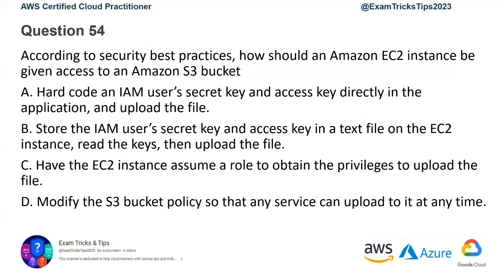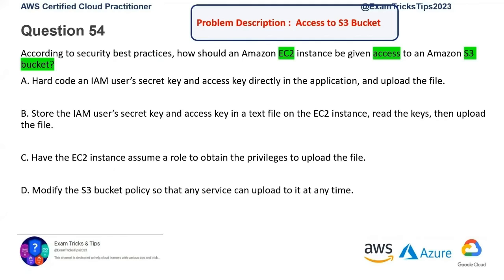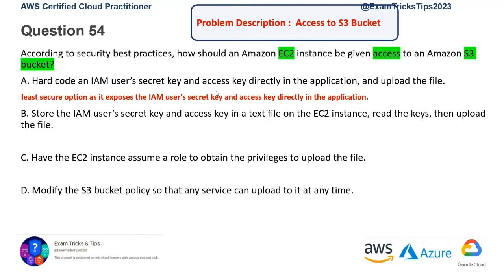Question number 54. According to security best practices, how should an Amazon EC2 instance be given access to an Amazon S3 bucket? We need an EC2 instance to access an S3 bucket. The first option says to hard code an IAM user secret key — the moment you see 'hard code,' it's never the right answer, anywhere. It's the least secure option. You're not going to hard code any credentials — that's wrong. Second option: store user secret key and access key in a text file. Again, we are not storing any keys anywhere. It's against security practices and will never be recommended.